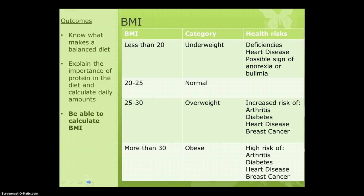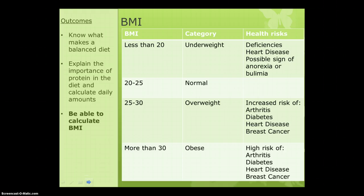A BMI of less than 20 means you're considered underweight, and there are health risks associated with that — including vitamin or mineral deficiencies, heart disease, and it can be a sign of eating disorders such as anorexia or bulimia. A healthy and normal BMI is 20–25. A BMI of 25–30 is overweight, and in this category you have an increased risk of arthritis, diabetes, heart disease, and breast cancer. A BMI of more than 30 is considered clinically obese, and your risk of those conditions is much higher. These are risks, not certainties — a BMI of 30 doesn't mean you will definitely get these conditions, you are just more likely to.